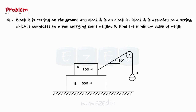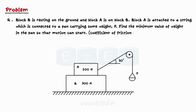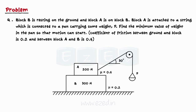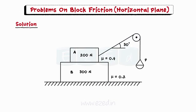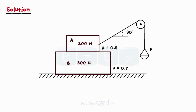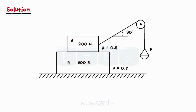Find the minimum value of weight in the pan so that motion can start. The coefficient of friction between ground and block is 0.2, and between block A and B is 0.4. The tension in the string is equal to the weight in the pan, P.